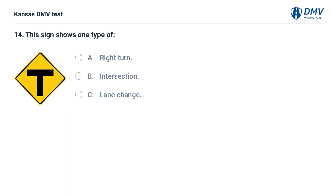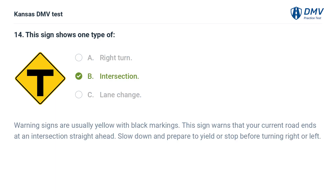This sign shows one type of: A. Right turn. B. Intersection. C. Lane change. The answer is B. Intersection. Warning signs are usually yellow with black markings. This sign warns that your current road ends at an intersection straight ahead. Slow down and prepare to yield or stop before turning right or left.